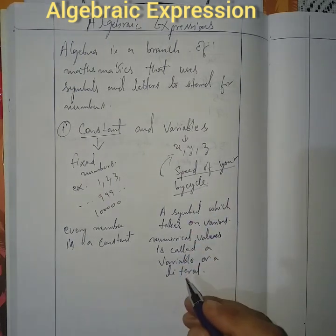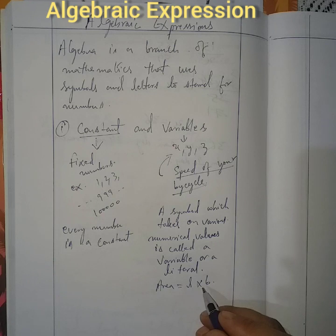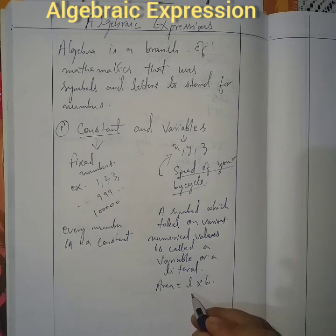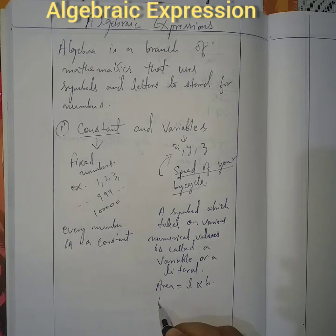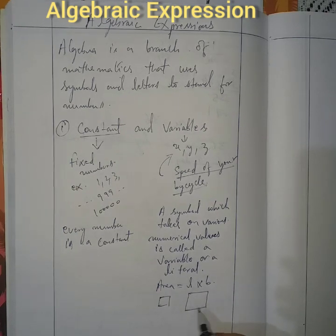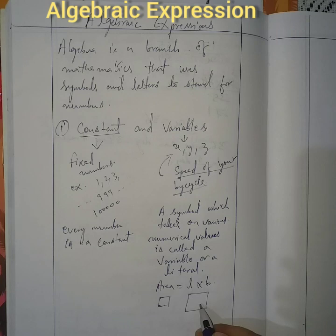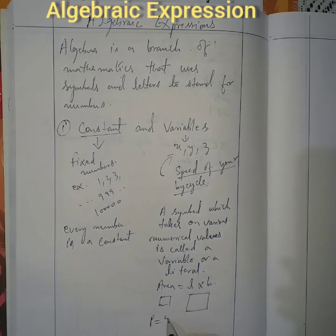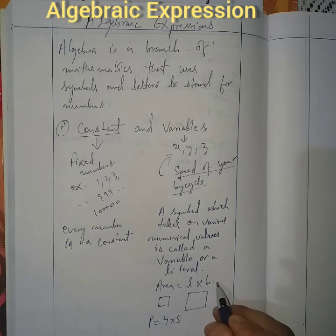Another example is area. Area equals length into breadth. A piece of land you are trying to find the area of — the length and breadth of that piece of land is different from another piece of land, so the area is different. Similarly, perimeter of a figure: perimeter equals 4 into side. The length of the side here and there is different, so P, S, L, and B are all variables.